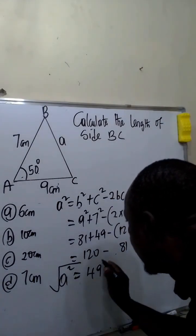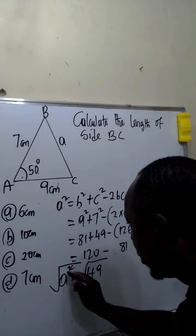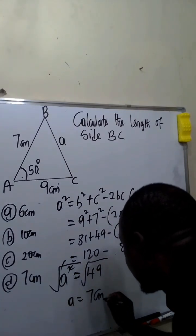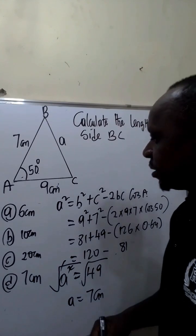So this implies square root of this and square root of this. Square root and square cancel. Our A will be equal to 7cm because the square root of 49 is 7cm.